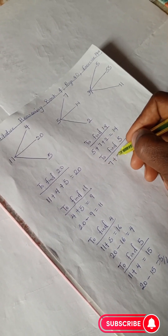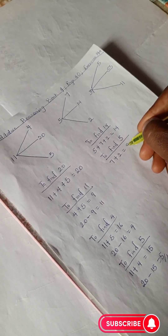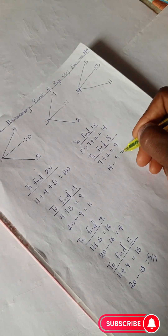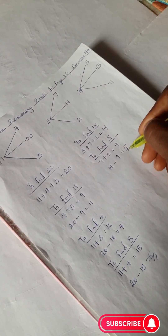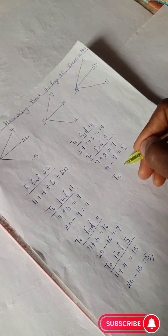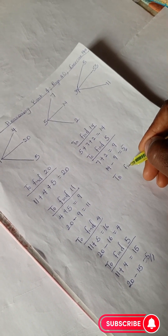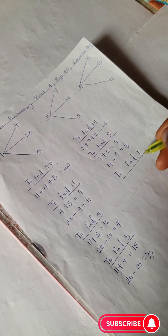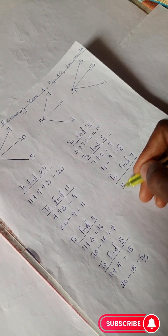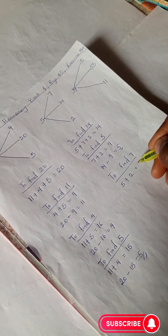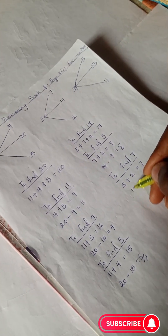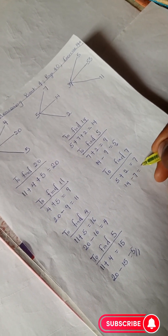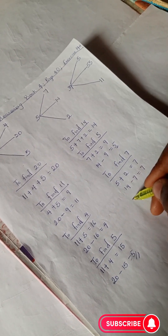To find 5, we have 7 plus 2 which is 9, so 14 minus 9 is 5. And to find 7, we have 5 plus 2 is 7, and 14 minus 7 is 7.